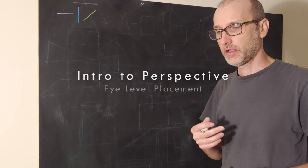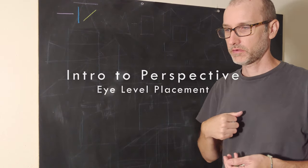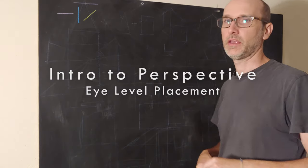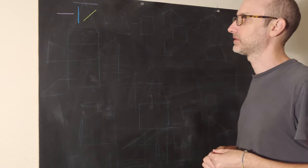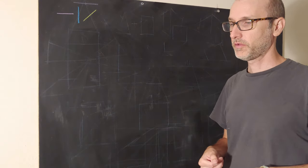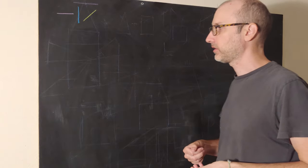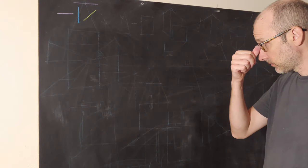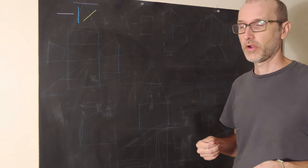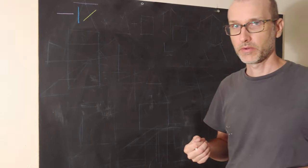The coolest thing about perspective is that it takes whoever's looking at an image and it puts them in the image, in the space, with all the boxes that you're drawing. And the way that it does that is through point of view or eye level. And the point of view is variable. And the way that you locate it is by just imagining where you are in the space and creating space around where you are.